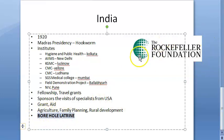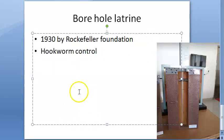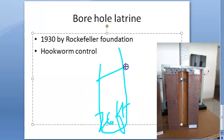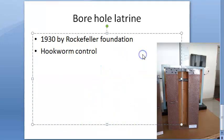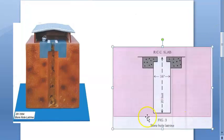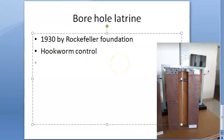The borehole latrine contains a circular hole around 16 inches in diameter, dug vertically into the ground to a depth of up to 26 feet. Commonly it is around 20 feet deep, as shown in the diagram. A special equipment called an auger (A-U-G-E-R) is used to dig this borehole.